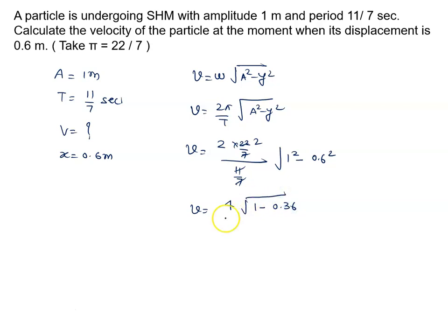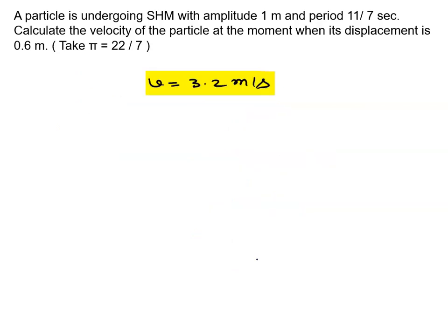To ye bhi kitna aake hai, v4 ye aage hai aapka 0.64 yani 0.8. Yani ki velocity kitna aake 32, 3.2 meter per second. This is the answer of this problem.